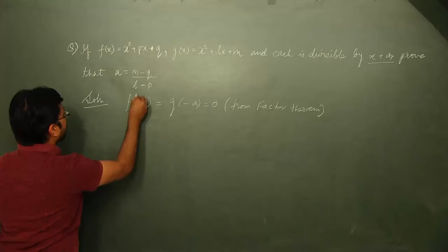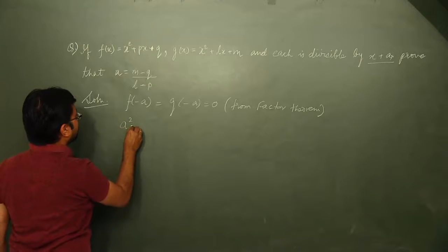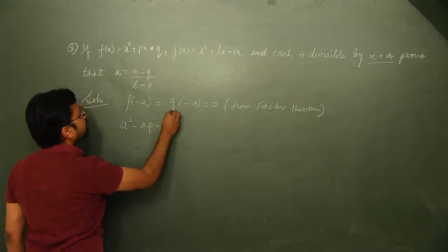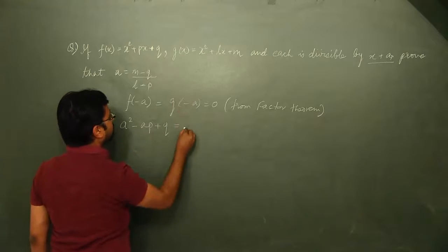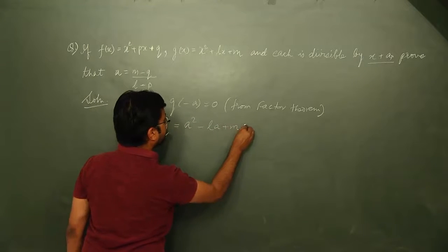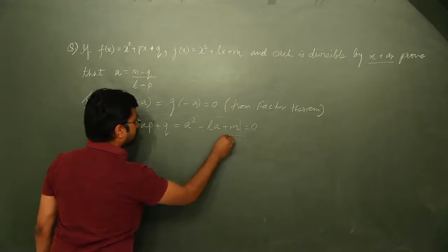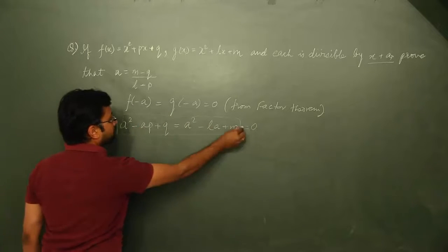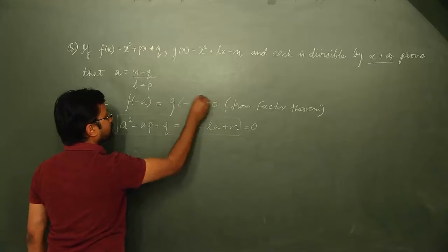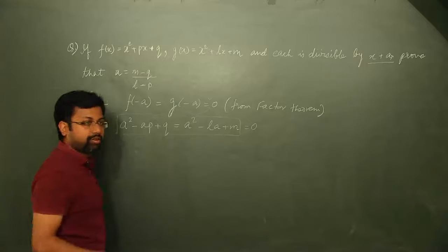So what do we get here? Putting minus a in f(x), f(minus a) would be a squared minus ap plus q. And putting minus a in g(x), we have a squared minus la plus m, and both of them are equal to 0. This equals 0 and this equals 0, therefore both of them are equal. f(minus a) equals g(minus a).